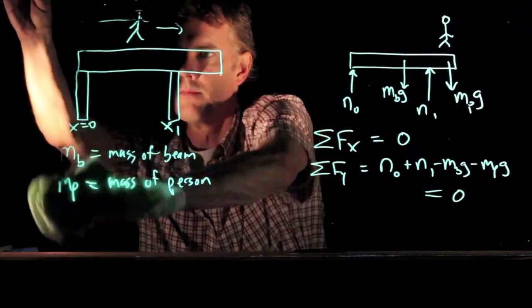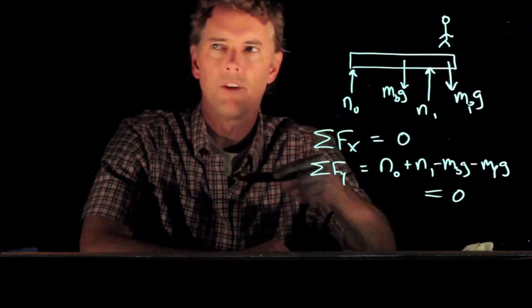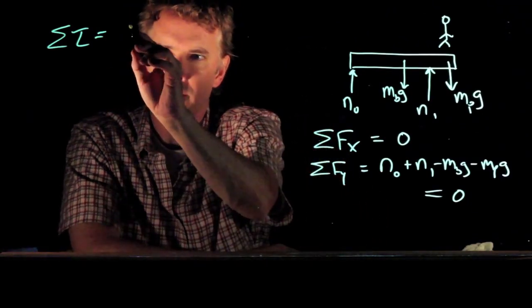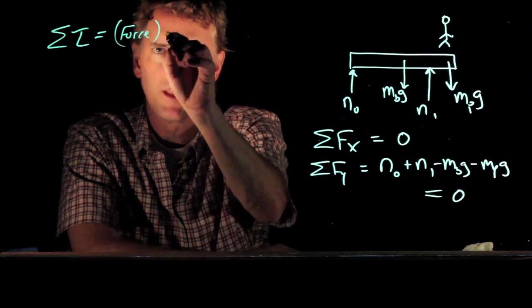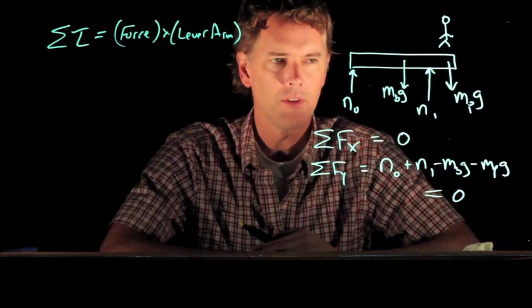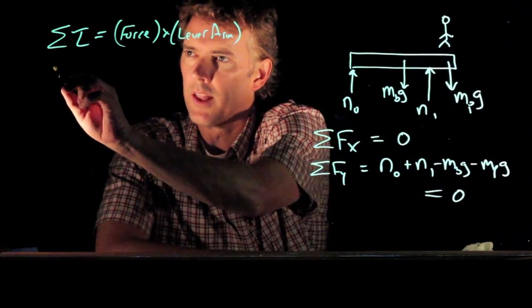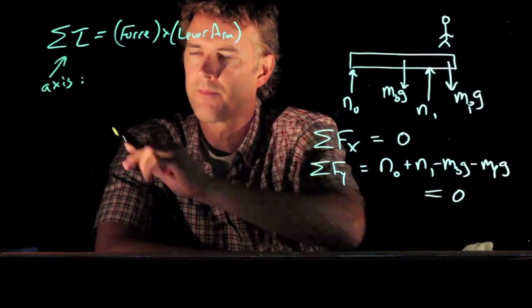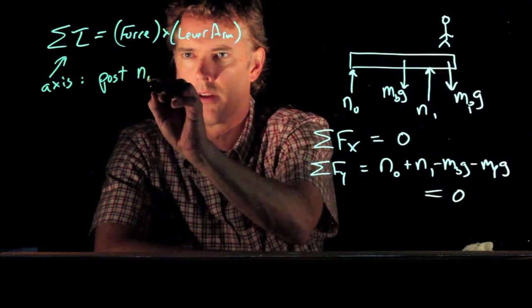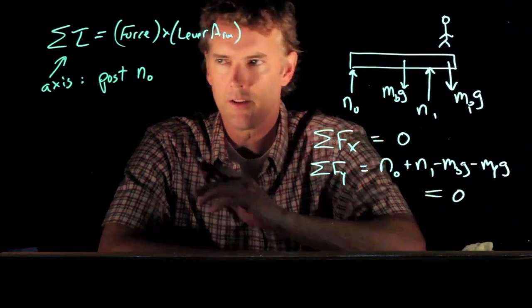All right. Now let's analyze the torques. So the torques are what? Well remember torque is equal to force times lever arm. And in this case all the forces are at right angles to the beam. So the lever arm is just how far is that force from the axis of rotation. So let's pick an axis. Axis of rotation. Let's say it's the left end of the beam, so post n0. That will be our axis of rotation. And now let's analyze the torques.